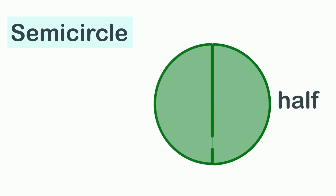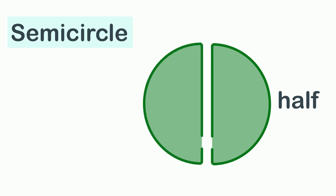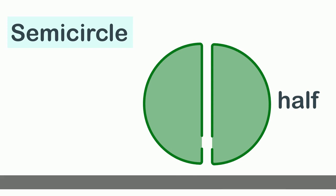This is a semicircle. Semi means half. It is half of a circle, that is why it is called a semicircle. You get a semicircle when you cut a circle into two equal parts. It looks like the letter D.